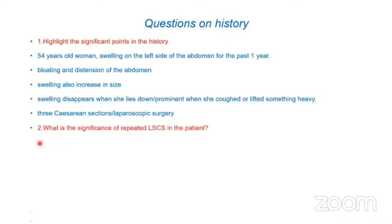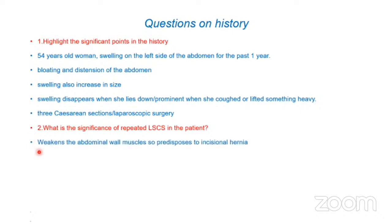What is the significance of repeated lower segment caesarean sections in this patient? Repeated surgery — or laparoscopic surgery, as in this case, and caesarean sections — weakens the abdominal wall muscles, thereby predisposing to the development of incisional hernia.